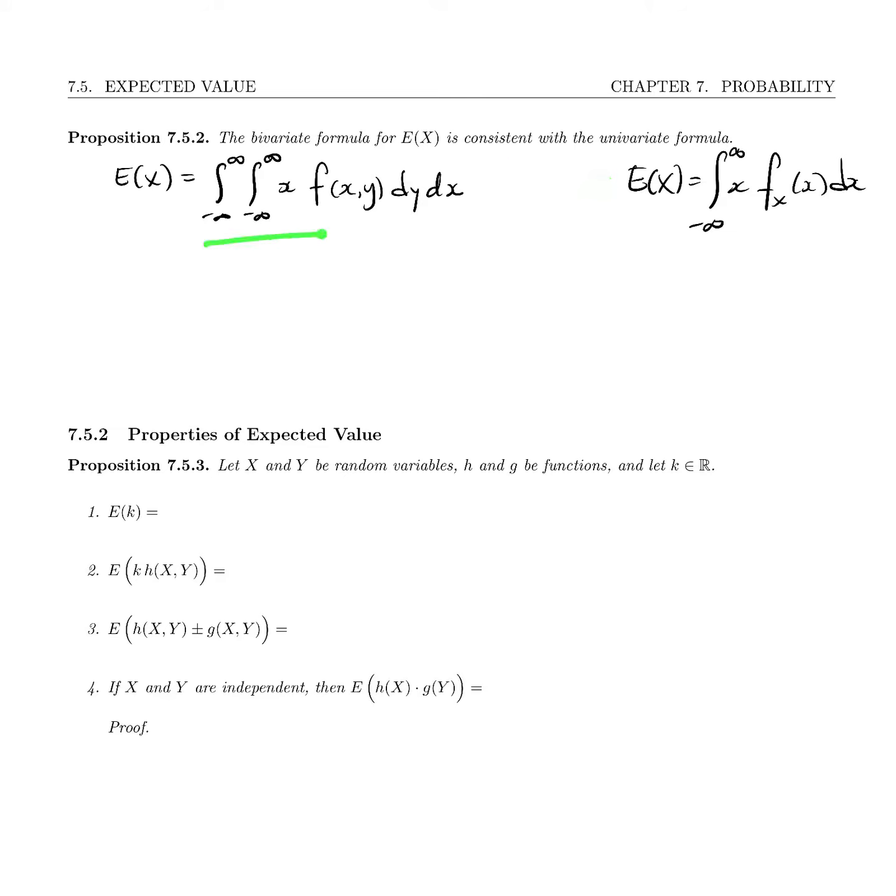Well let's take a look at this integral here. The inner integral is with respect to y and so x is a constant. We can move that out. And so if we do, we've got the integral from minus infinity to infinity of x times the integral from minus infinity to infinity of f of xy dy and then times dx.